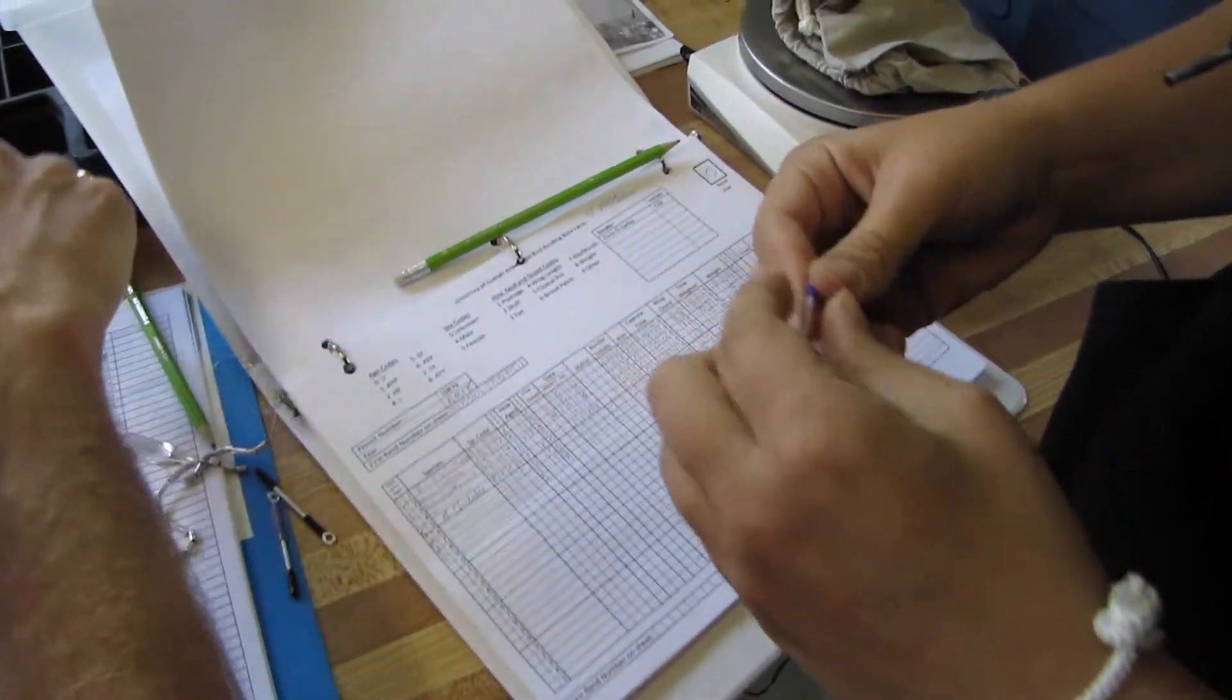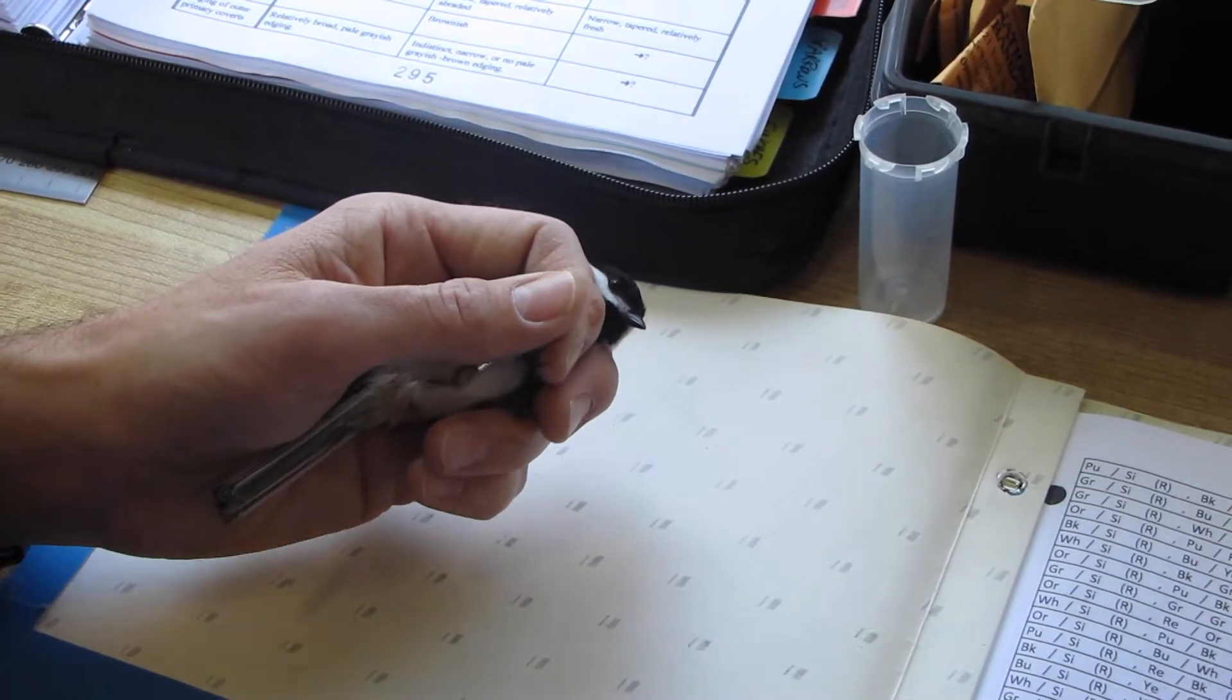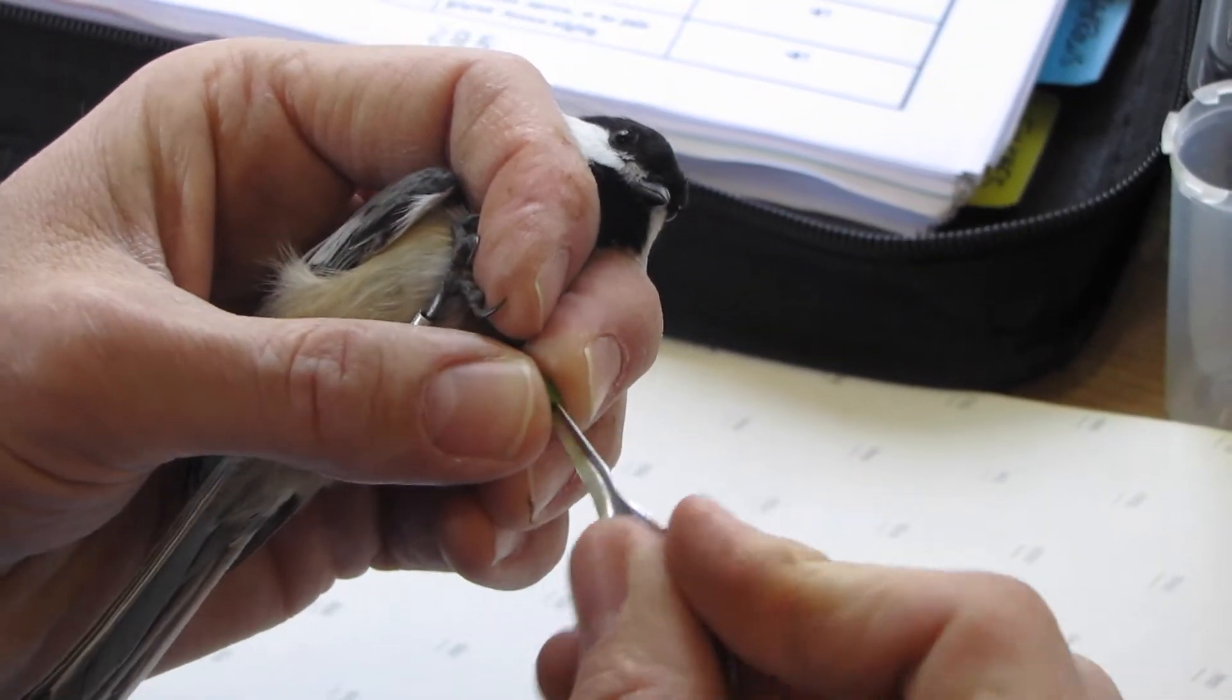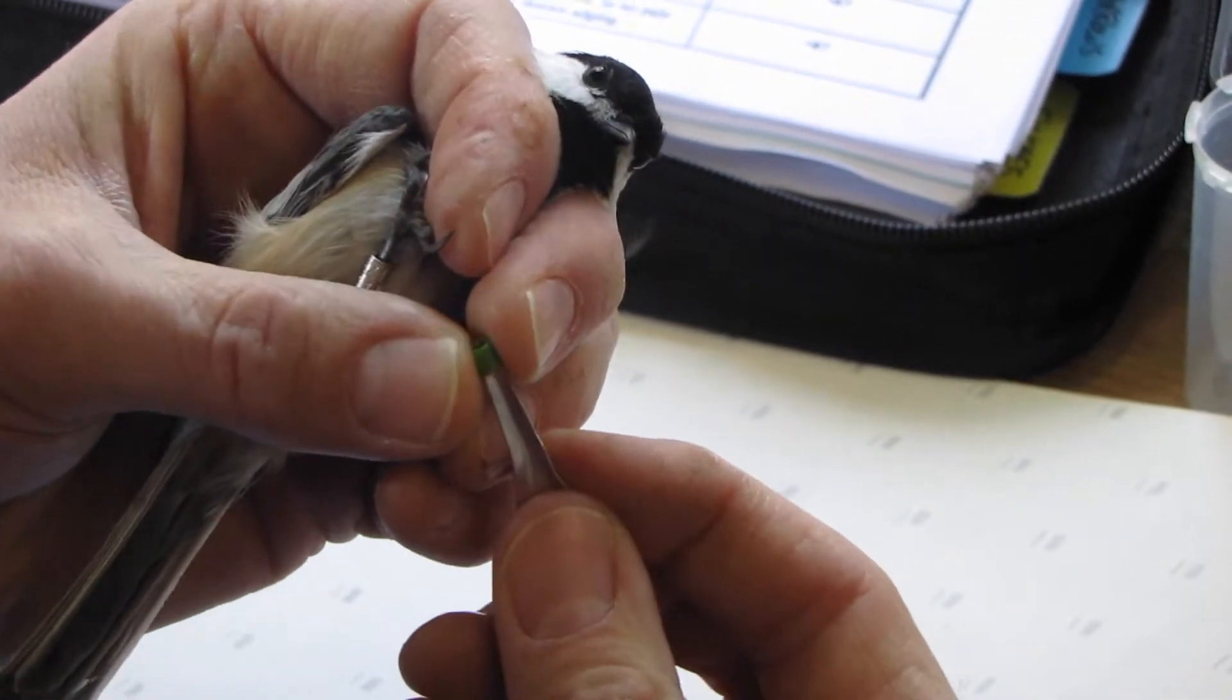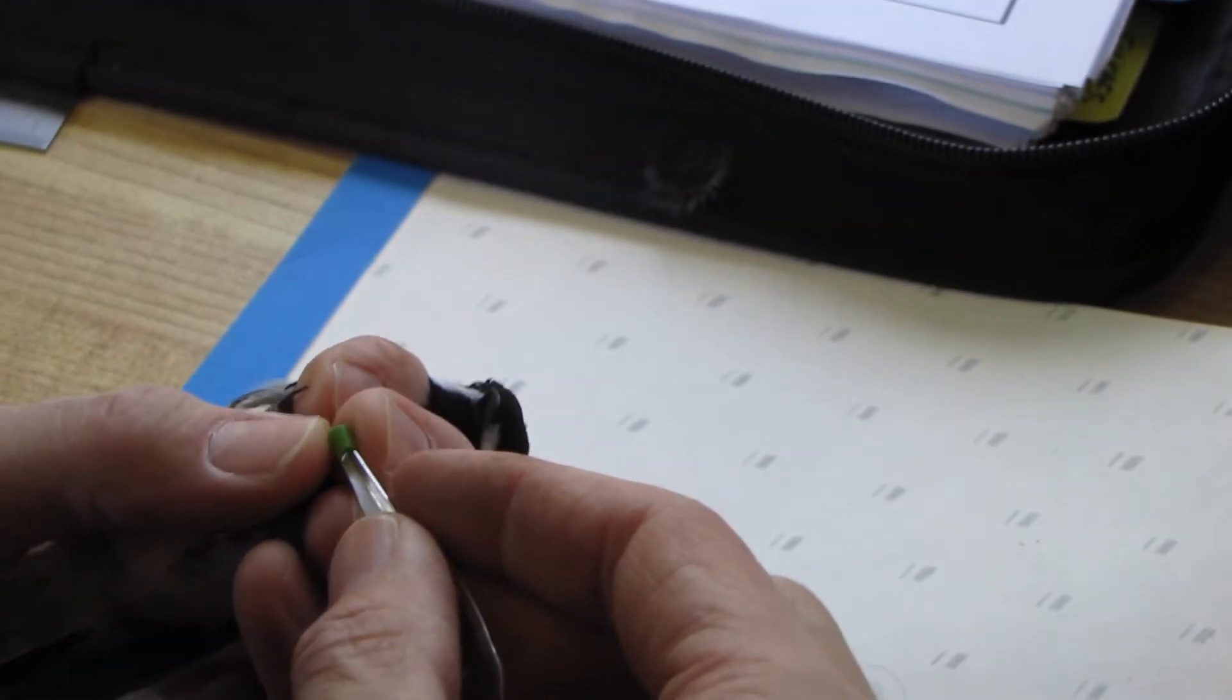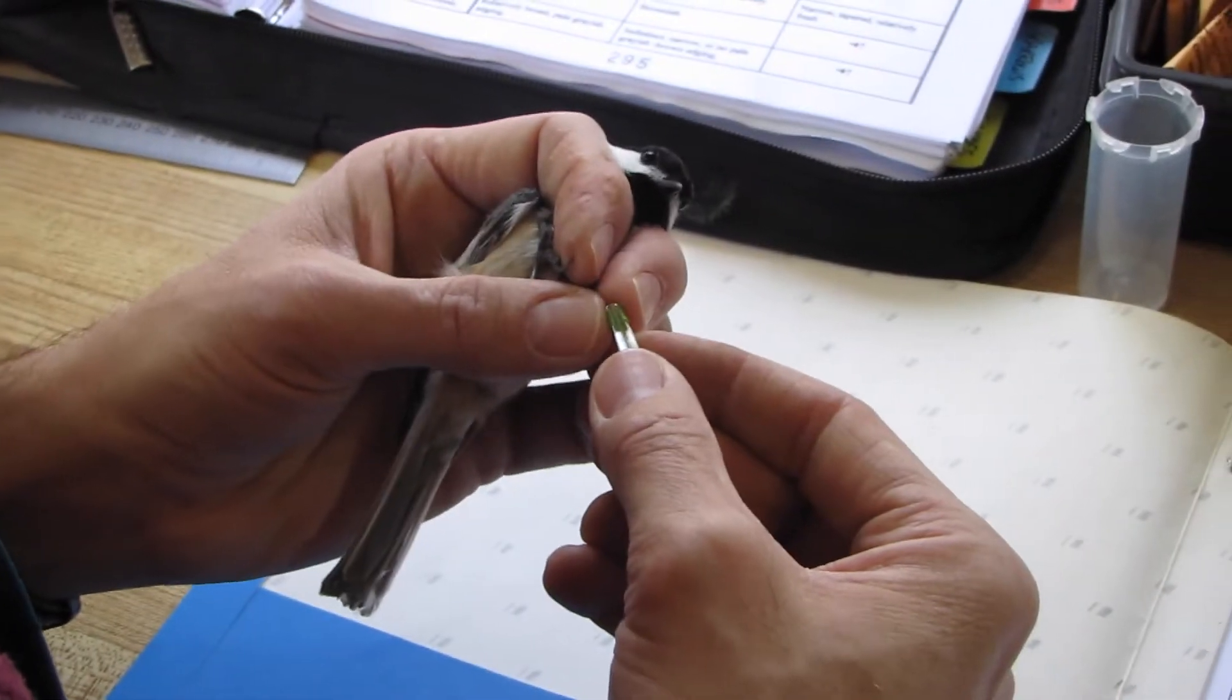So these plastic bands are easier to put on because they just have a seam in them. So we just use this little silver thing. Finding the seam is a bit of a problem sometimes. There we go. And so we spread that open like that.